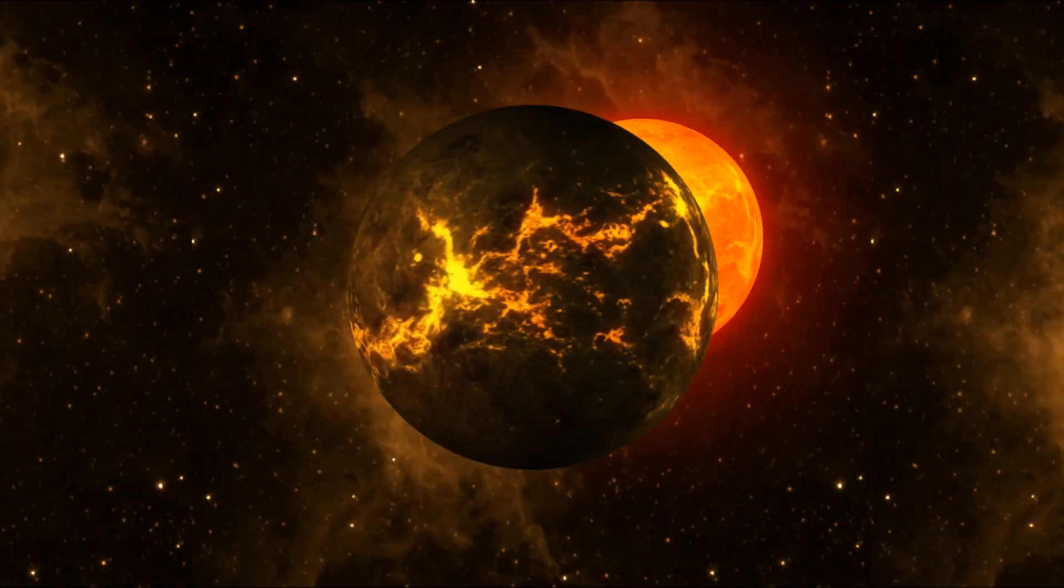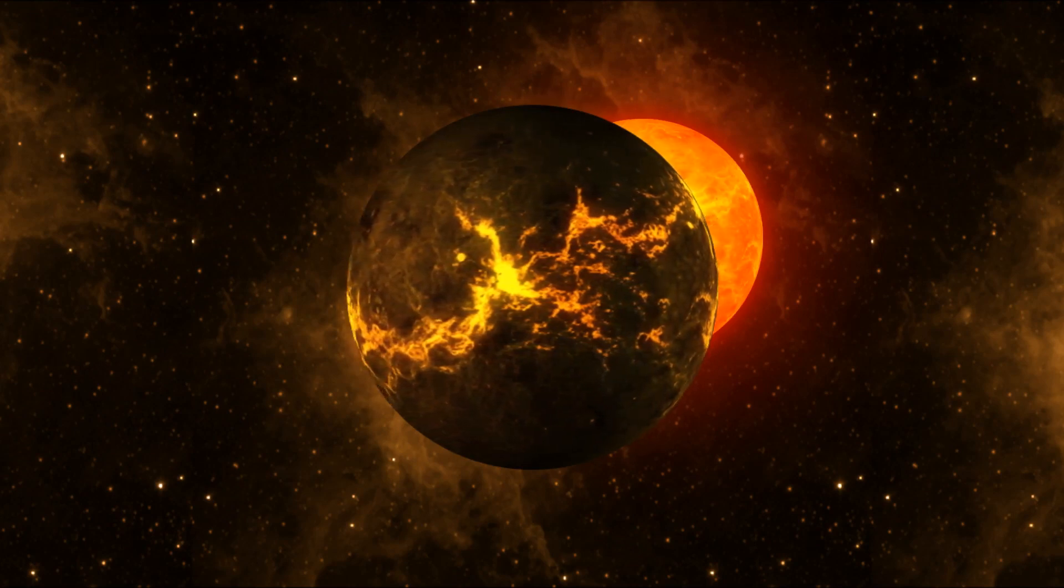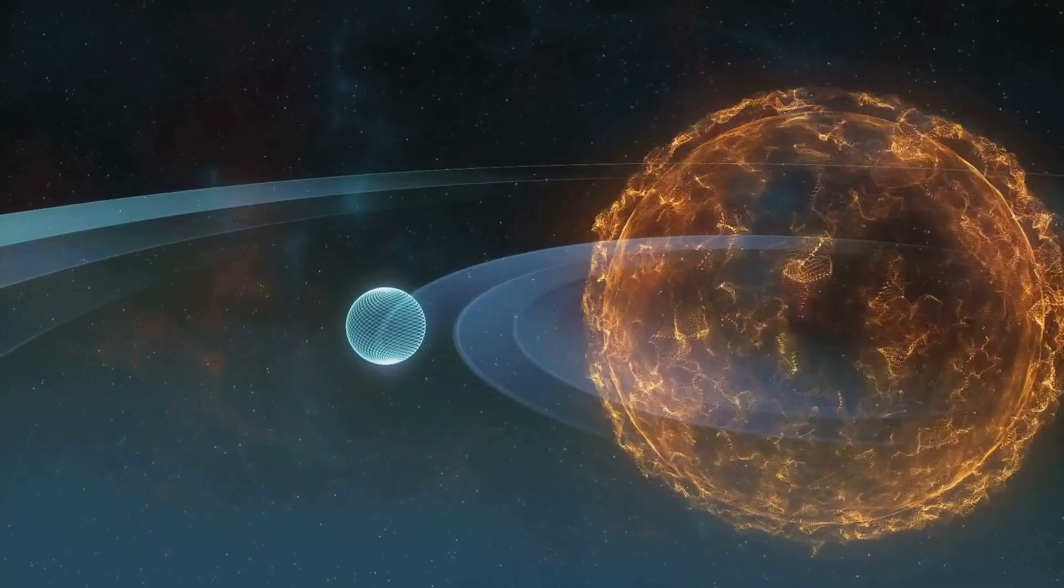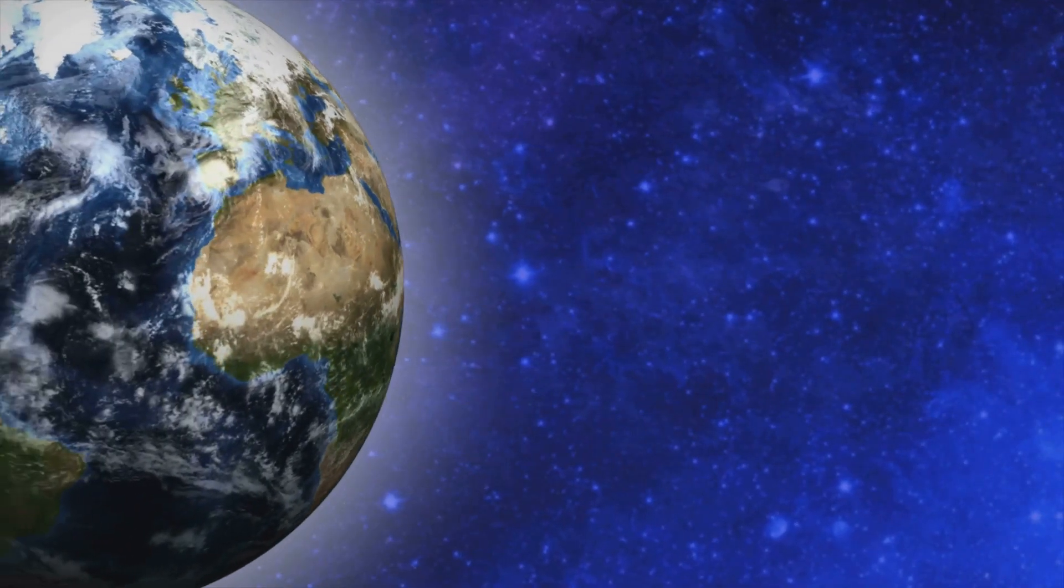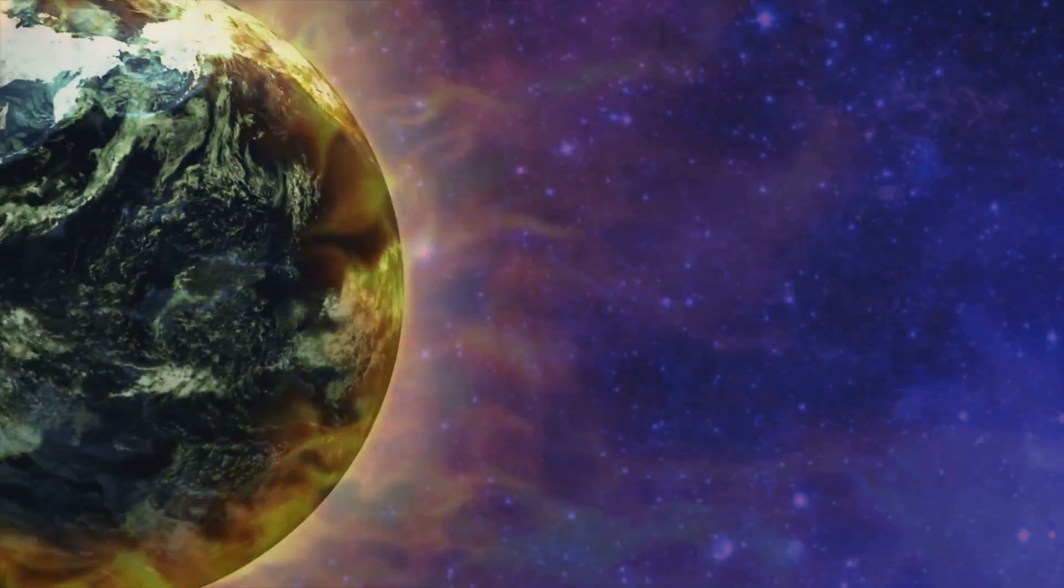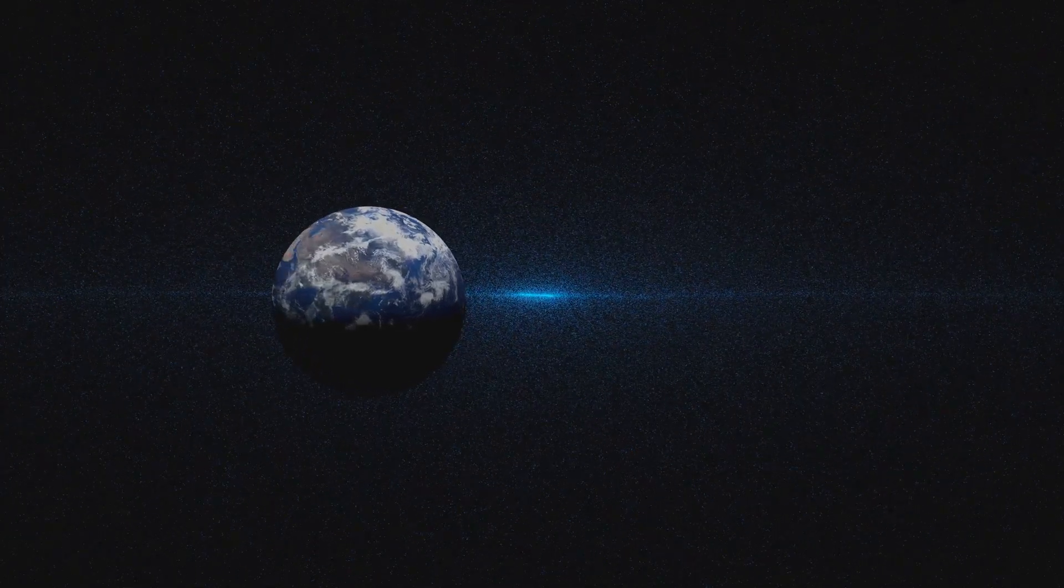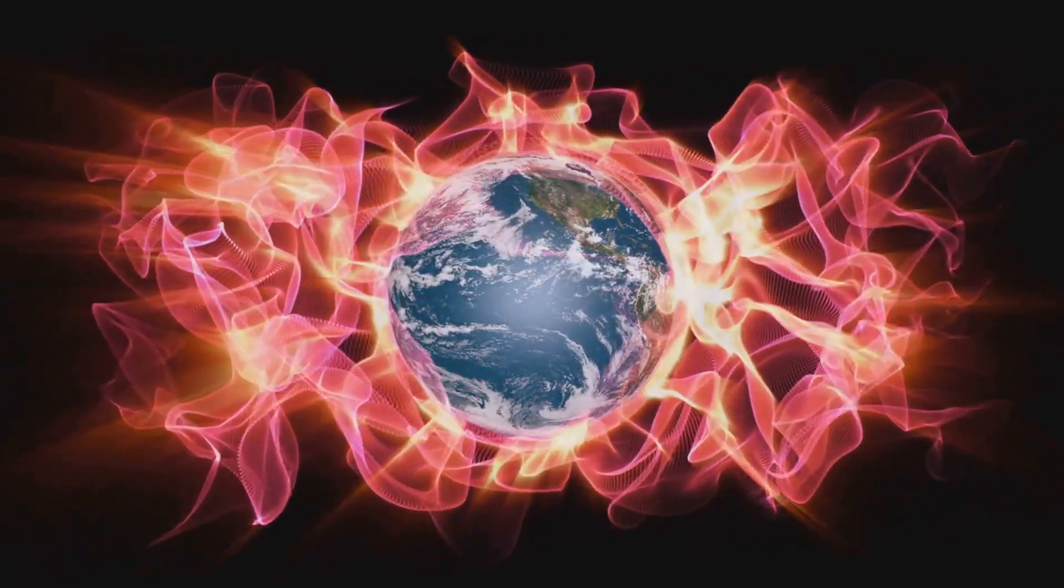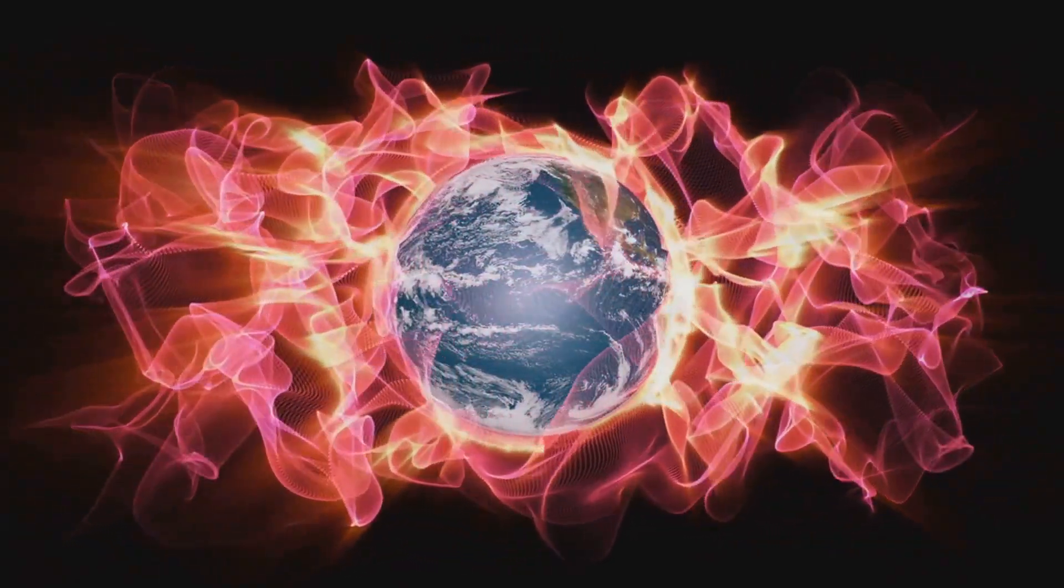But what if such a burst were to happen close to us? Well, the effects could be catastrophic. The intense radiation from a nearby GRB could strip away the Earth's ozone layer, exposing us to harmful ultraviolet rays from the sun. This could lead to mass extinctions, similar to what happened to the dinosaurs, but on a global scale. The probability of a gamma-ray burst affecting Earth is incredibly small, but the potential consequences are so severe that it's worth our attention. It's a reminder of the immense power and energy at work in our universe, and how our existence is intertwined with these cosmic phenomena. The power of gamma-ray bursts is truly a force to be reckoned with.